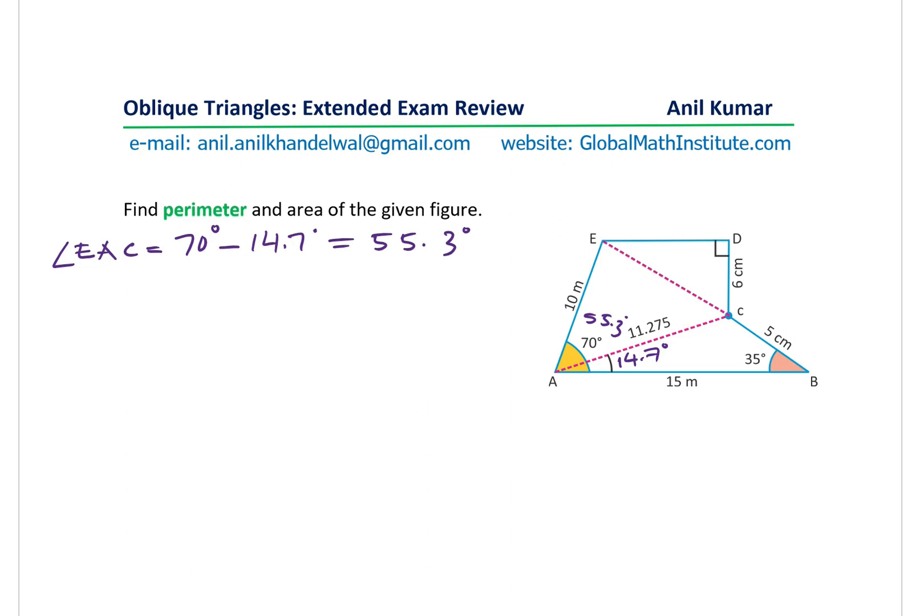Again we have this combination of two sides and an angle. So we'll use the cosine law once again. We'll apply cosine law to find the side E to C, which is square root of the squares of these two: 10 square plus 11.275 square, minus 2 times 10 times 11.275, cos of the angle 55.3 degrees.